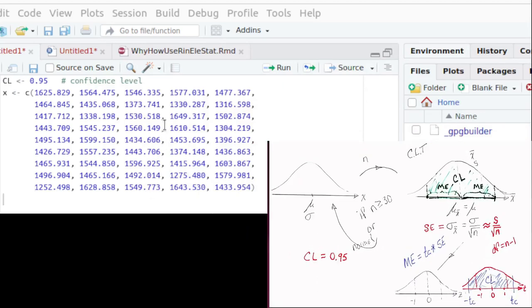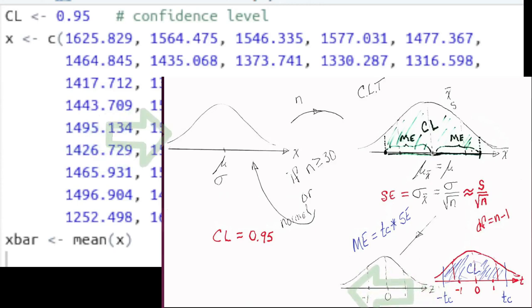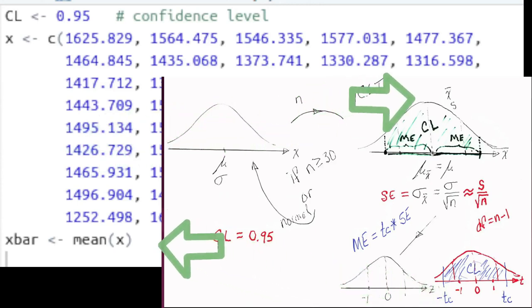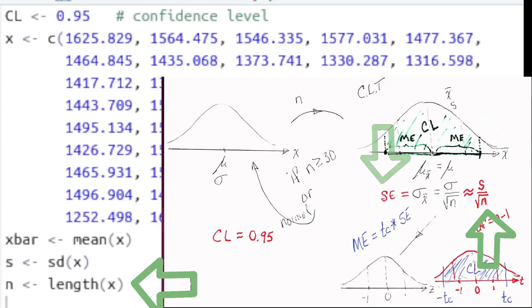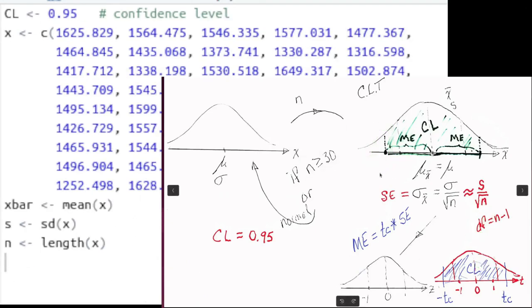Data scientists say that they often spend nearly 80% of their time wrangling the data. But once we've got that data into a vector, we can easily find the sample mean and the sample standard deviation. Now to find SE, we're going to need to know the sample size. We can easily find that because it's just the length of vector X. So now we have all the information to find the standard error.